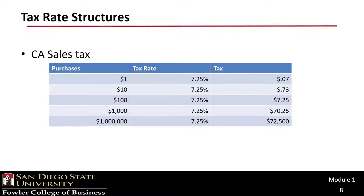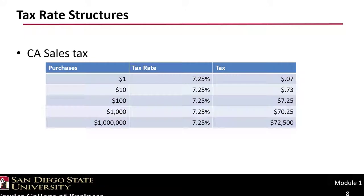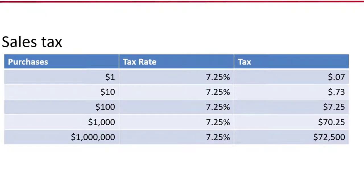Before we leave tax rate structures behind, I want to introduce a slightly different way of looking at the issue of progressivity and regressivity. Let's take a look at the California sales tax. For this purpose, I am ignoring any specific local taxes and instead focusing on the standard 7.5%. As you might expect, since the sales tax is based on consumption, the rate structure is a flat rate structure with respect to sales.